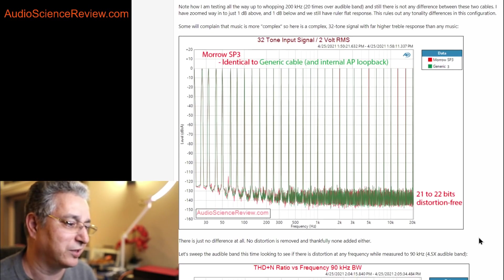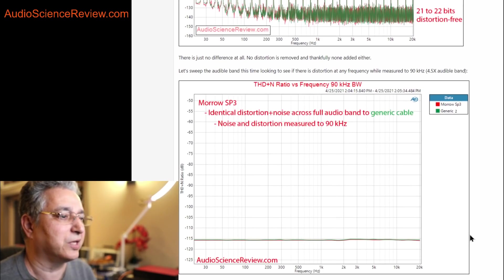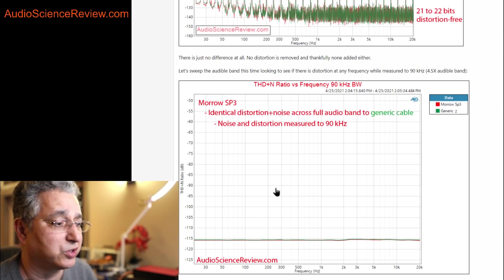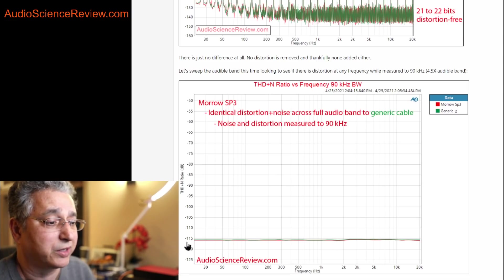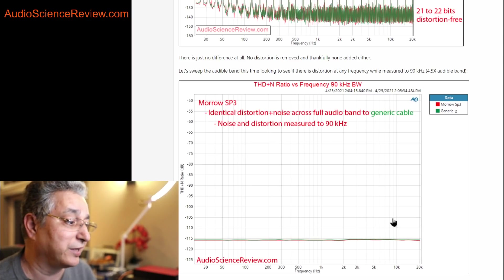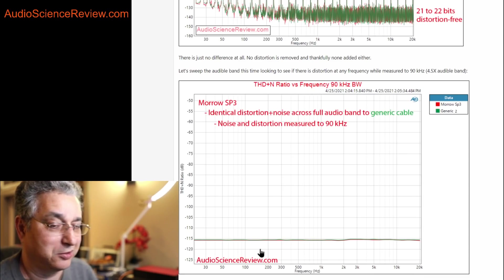Remember, the threshold of hearing is minus 115. So we're at 15 to 20 dB better than that as far as distortion. So whatever distortion the generic cable is creating, which the company said was a problem, is below the distortion floor of the Audio Precision analyzer, which in turn is 20 to 30 dB better than our hearing. And that's basically 100 to 1,000 times better than our hearing. And we can also run a distortion plus noise sweep, where we vary the frequency and see if we have any distortion and noise.